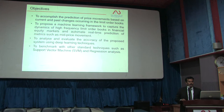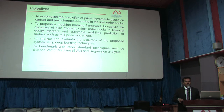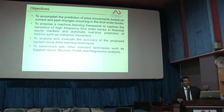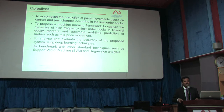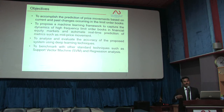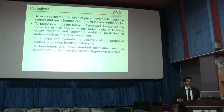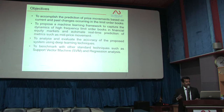The objectives of the proposed work: to accomplish the prediction of price movements based on current and past changes occurring in the limit order books — for example, predicting next week's stock value based on last week's and this week's history. To propose a machine learning framework to capture the dynamics of high-frequency limit order books and automate real-time prediction. To analyze and evaluate the accuracy of the proposed model using deep learning techniques, and to benchmark with other standard techniques such as SVM and regression analysis.